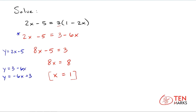Again, we solved algebraically that there was one solution. So what we're looking for is two lines that intersect at one point — one solution, one intersection.